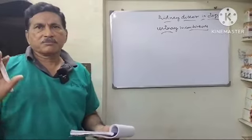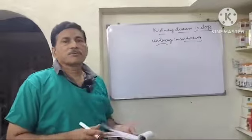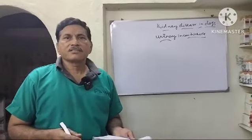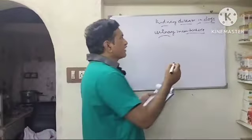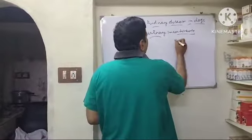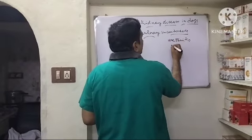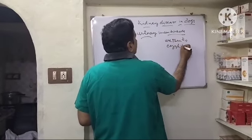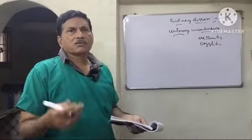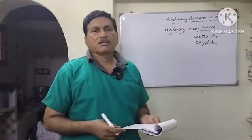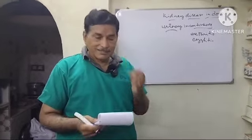The first symptoms we need to identify relate to kidney problems: urinary infections, urinary arthritis, bladder cystitis. We have to identify urinary incontinence and urinary infections as key indicators of kidney issues.